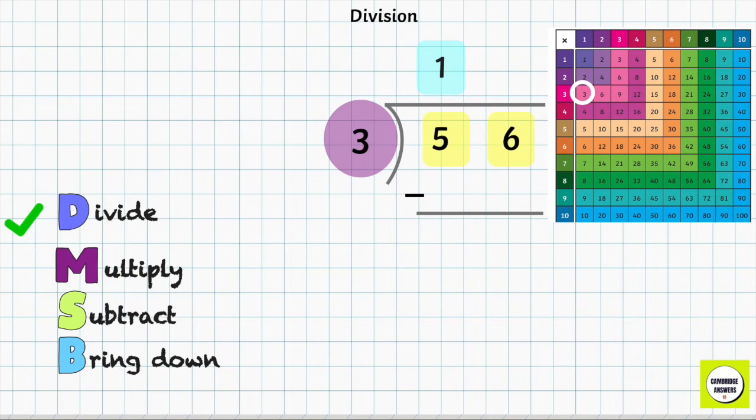The next step is to multiply. We are going to multiply 3 and 1 to get 3. Now the next step is to subtract. We are going to subtract 3 from 5 to get 2.